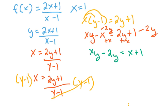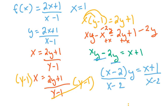Now we have some things in common here. So we can do some factoring. We're going to be able to factor out a y. So we're left with x minus 2 times y equal to x plus 1. Now we divide by x minus 2 on both sides. So now we have y is equal to x plus 1 divided by x minus 2. So now we have the inverse.